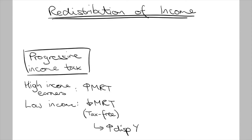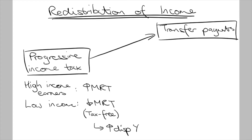Another reason for the lower inequality is transfer payments. Transfer payments are substitutes for income provided by the government. Examples include social welfare, unemployment benefits, pensions, and disability care. These are targeted at supplementing the disposable income of lower income households. Therefore, transfer payments lessen income inequality.